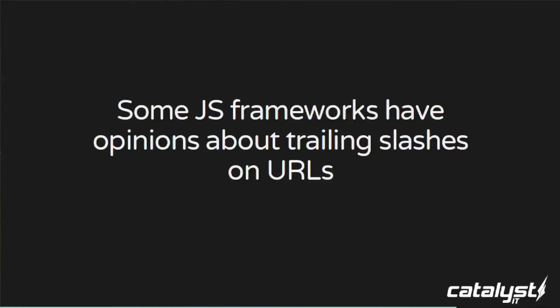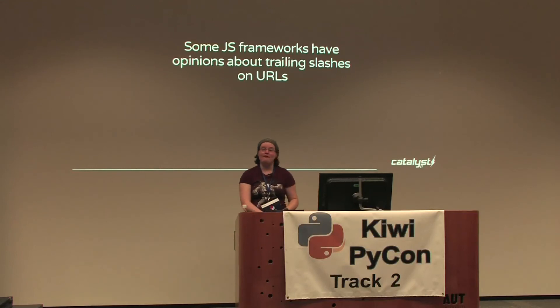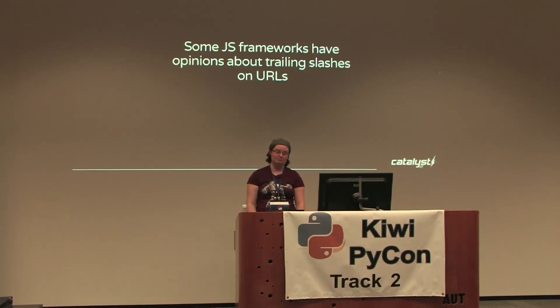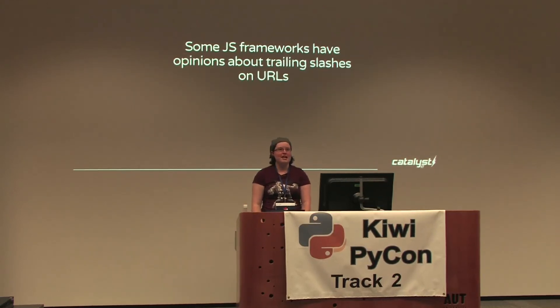This one tripped me up — at the time you're tearing your hair out, but later it seems trivial. Some JavaScript frameworks have opinions about trailing slashes. Angular strips off all trailing slashes, but anybody who's worked with Django knows it really likes trailing slashes, and TastyPie does too. Fortunately, Django and TastyPie are both mature enough that they have settings options where you can say we don't need to worry about the trailing slash.